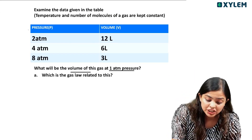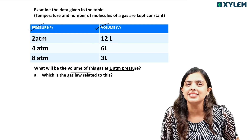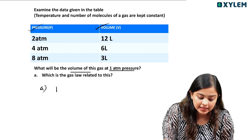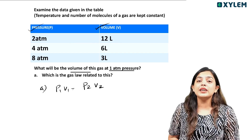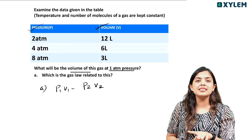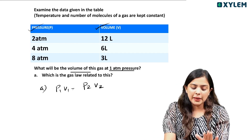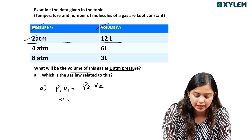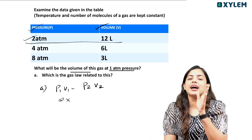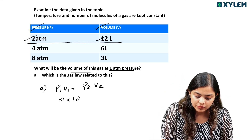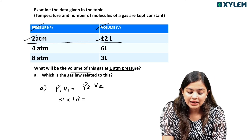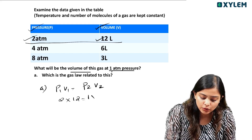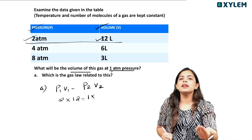We will see the pressure and volume of this gas at one atmospheric level. This gas should not take an atmosphere at one atmospheric level.